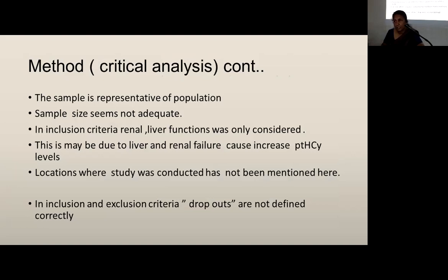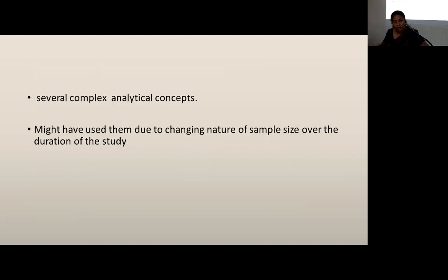The sample is representative of the population, but the sample size seems not adequate. In inclusion criteria, only renal and liver functions were considered — likely because liver and renal failure causes increased plasma homocysteine levels. The location where the study was conducted was not mentioned in the methods, though it was mentioned initially. Dropouts are not defined correctly — dropout should mean only missing data, not people removed from the study due to needing another drug. Several complex analytical concepts are used, possibly due to the changing nature of sample size over the study duration.